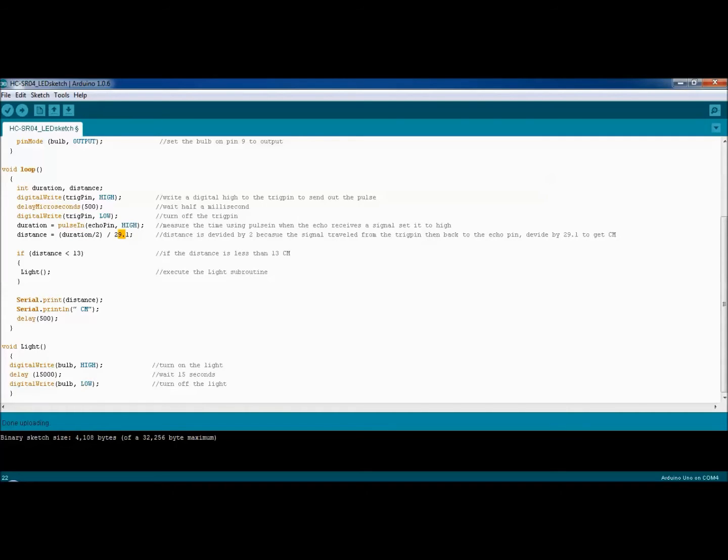Now that we have all the information, we put it into an if statement. If the distance measured is less than 13 centimeters, go ahead and execute the lights up routine. When activated, it turns on the light bulb, waits for about 15 seconds, and then turns it back off.